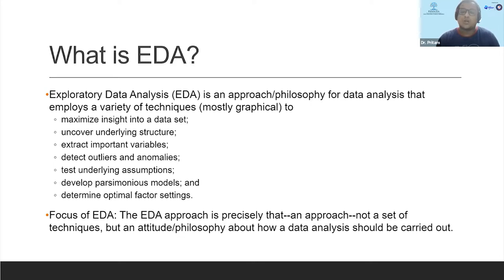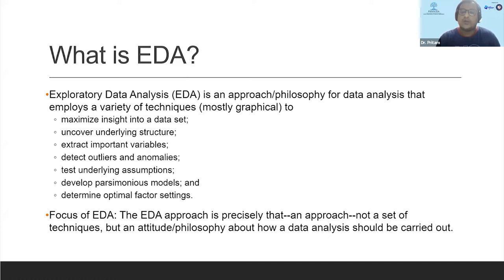EDA also helps to develop parsimonious models. You might have a dependent variable and a set of explanatory variables, but some might be important and some might not. EDA helps you cut short your total data structure so that with a few parameters you are able to explain the phenomenon. Finally, you can also determine optimal factor settings — what levels of factors would be important to identify whether there is any trend or pattern in the data. The moral of the story is that EDA is basically an approach — it's not a set of techniques and not a simple rule.